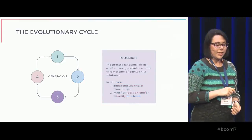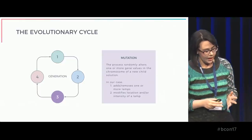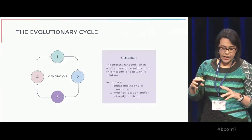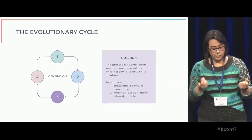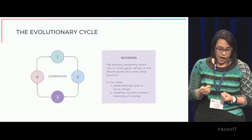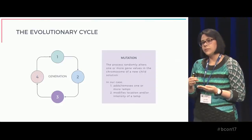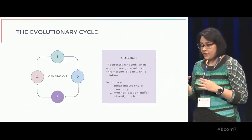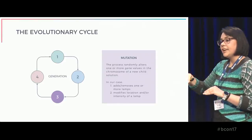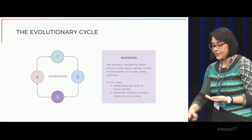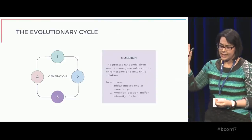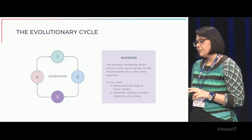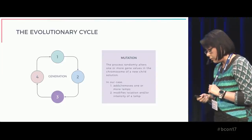The second genetic operator is mutation. As in real biological reproduction, a random alteration occurs during the combination of the genetic material of the parents. One or more gene values in a chromosome change from their initial value according to a mutation probability. This process is fundamental to maintain genetic diversity from one generation to the other. In our specific case, a mutation can either remove one or more lamps from a solution, or can modify the location and the intensity of one of the lamps.